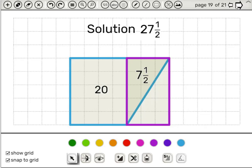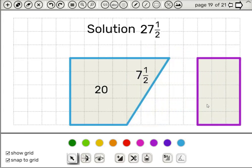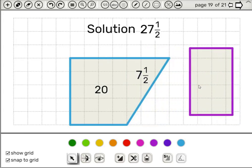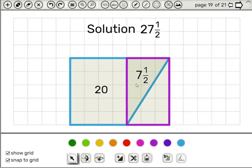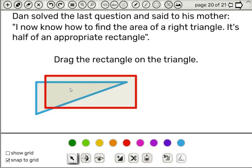And beyond the value of this lesson in developing creativity and curiosity, understanding of the calculation of the area of a right triangle is the formal goal of the lesson. This rectangle can be dragged out and back. While dragging the rectangle out, we can see this complicated shape. We place it back, and we see how this solves the problem. And here we have the final generalization. Dan solved the last question and said to his mother, I now know how to find the area of a right triangle. It's half of an appropriate rectangle. And we can see this, this time, without the grid, by dragging the rectangle onto the triangle.